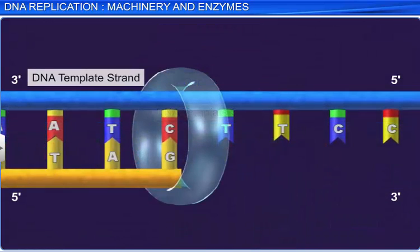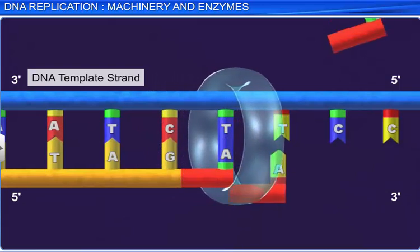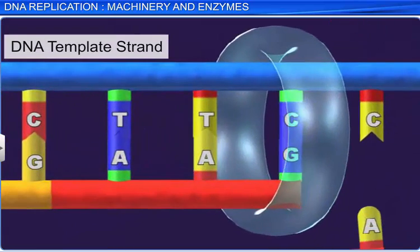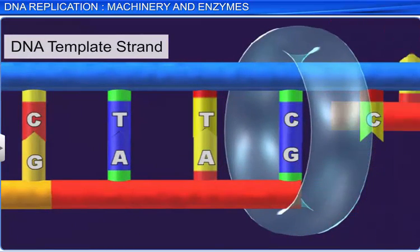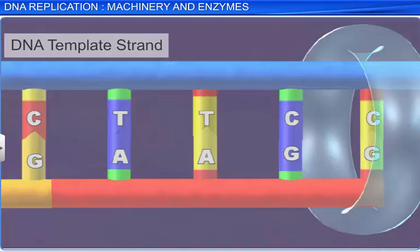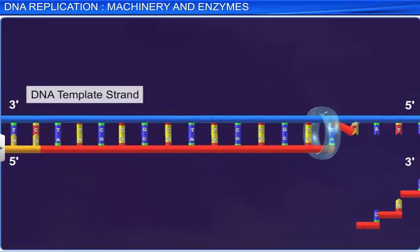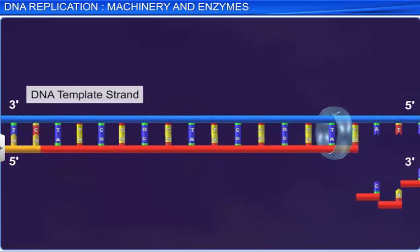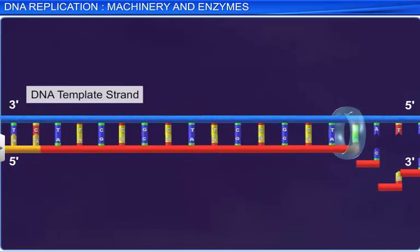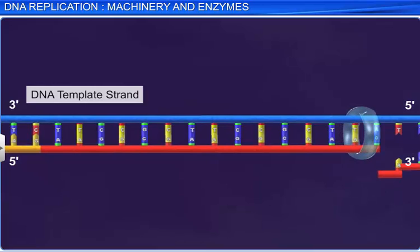The DNA replication process requires a high degree of accuracy, because any error during replication will result in mutations. Thankfully, DNA polymerase is a highly efficient enzyme that catalyzes the reaction not only with accuracy but also very swiftly. It catalyzes the polymerization of a large number of nucleotides in a very short span.